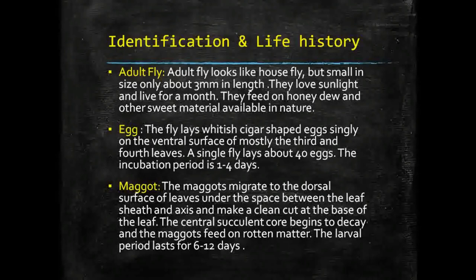After hatching, the larvae are commonly called maggots in dipteran insects. The eggs are laid on the ventral surface of leaves, and after the incubation period, they hatch into maggots which then migrate to the dorsal surface of the leaves.